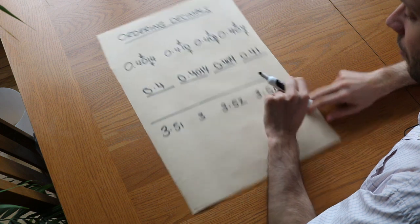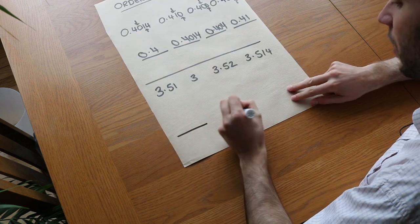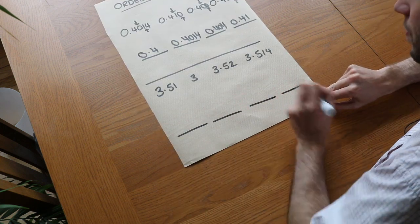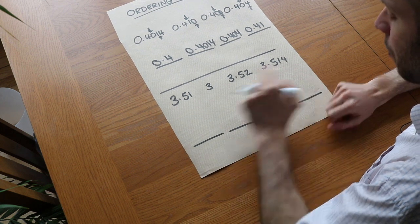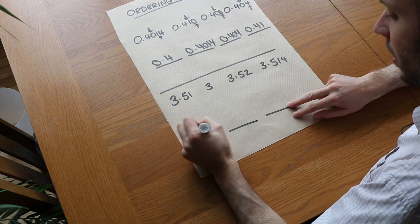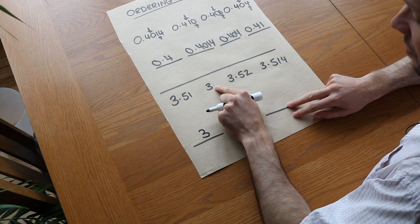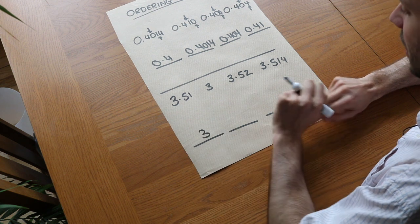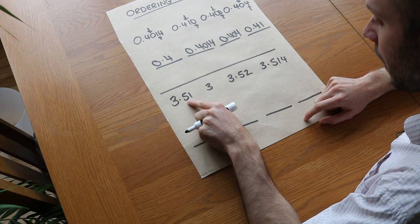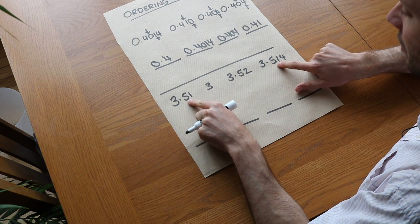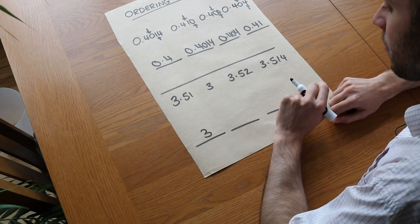Right let's do this second one, we want to order them again, we can use exactly the same principle. Well they all have the same units digit of three that's not going to help, but we can see that three is going to be the smallest because it doesn't have anything after the decimal point. So next we look at the tenths digit where we've got five tenths, five tenths, five tenths, so it's a draw that doesn't help.